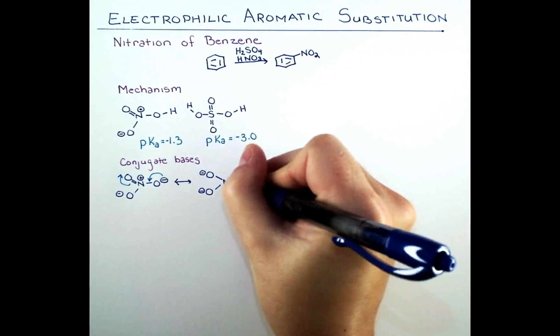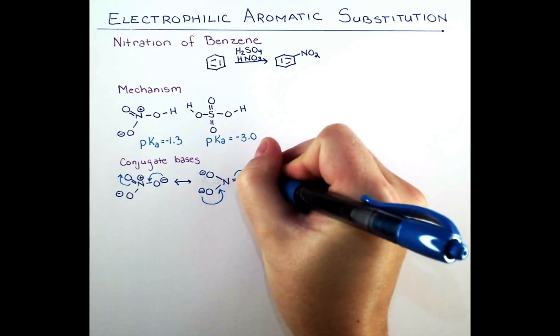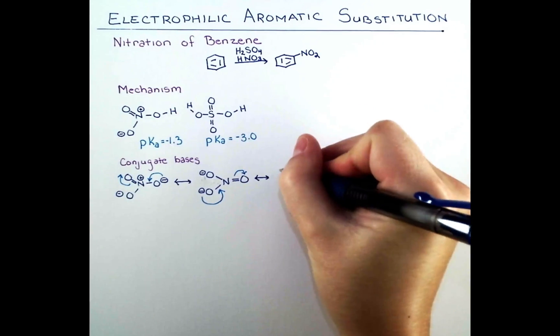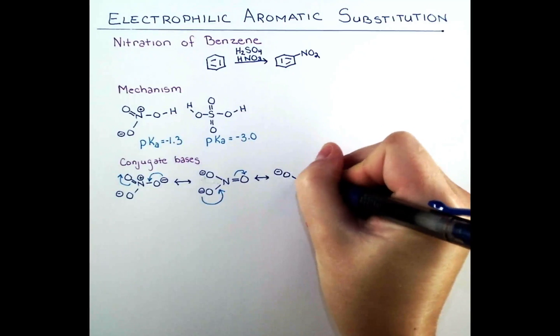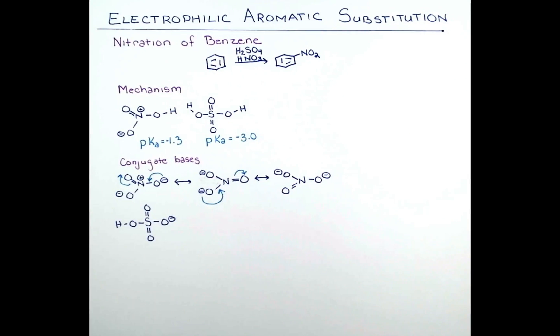We can show delocalization in the conjugate base of nitric acid by pushing electrons from the oxygen anion through the double bonded oxygen. This gives us a total of three resonance forms for the conjugate base of nitric acid.